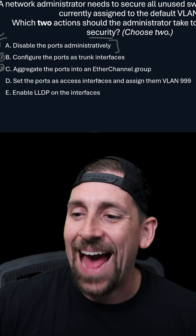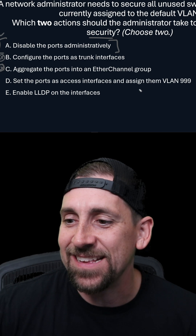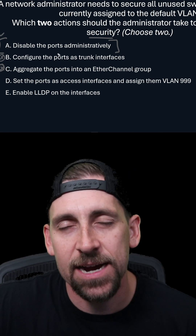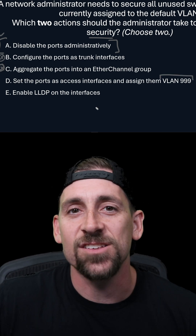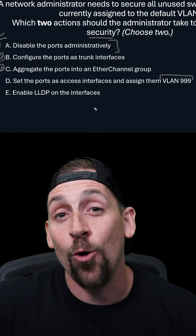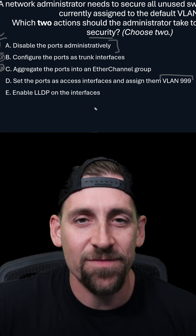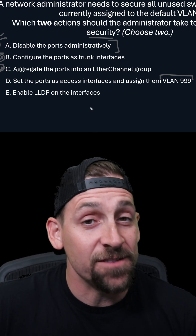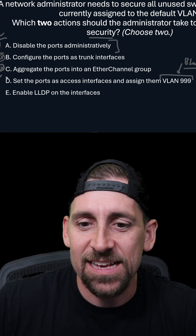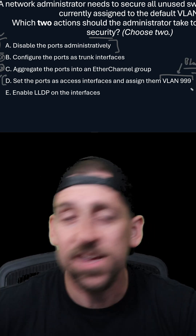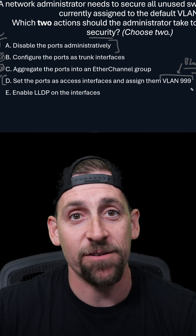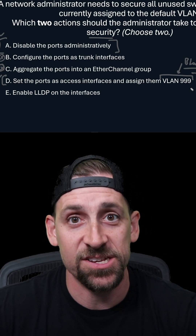Option D is to set the ports as access interfaces and assign them to VLAN 999. VLAN 999 is often configured as the black hole VLAN — a VLAN that you never configure other interfaces in. This is one of the two configurations that contributes to security.